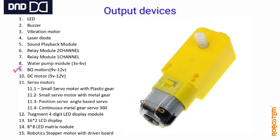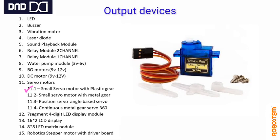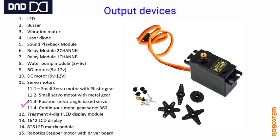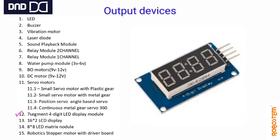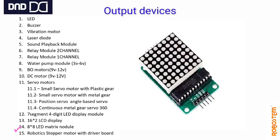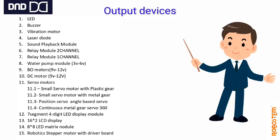This is a water pump module used in small fountains. BO motors — Battery Operated motors — require 9 to 12 volt DC. This is a normal DC motor at 150 RPM. This is a small servo motor with plastic gears, and this one has metal gears — same size but different gears. One is positional servo (angle-based) and the last is continuous metal gear — four different types of servo motors. This is a seven-segment LED display seen at petrol bunks. This is a 16x2 LCD — 16 characters across two rows. This is an 8x8 dot matrix display. The last is a robotics stepper motor with a driver board.